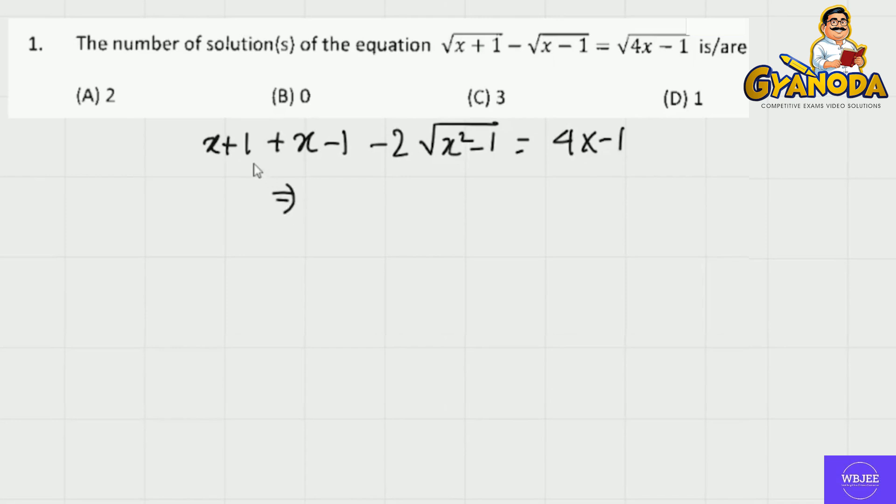This implies 2x minus 1 plus 1. This implies minus 2 root x square minus 1 equals 2x minus 1.